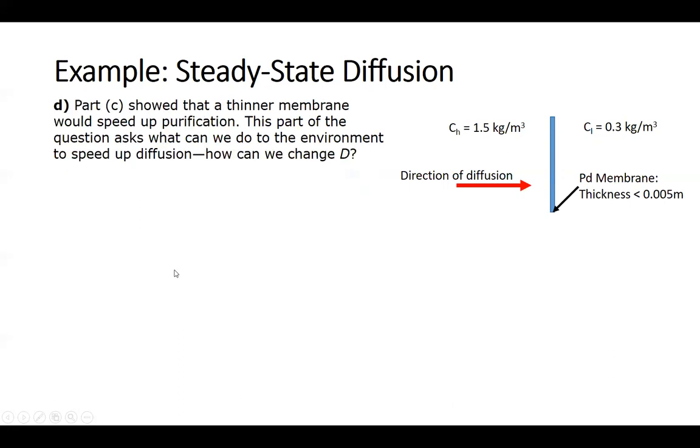So our final question is, how could you alter the environment to enhance the performance of this membrane? That means purify the hydrogen faster. In part C, we showed that a thinner membrane would speed up purification. In this part, we want to focus on what can we do to the environment to speed up diffusion? How can we change D? That's the only other term in the problem.